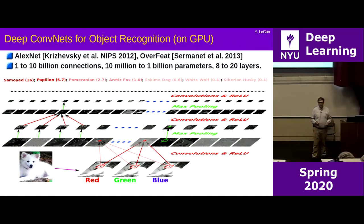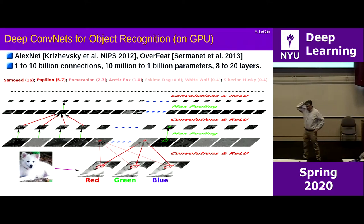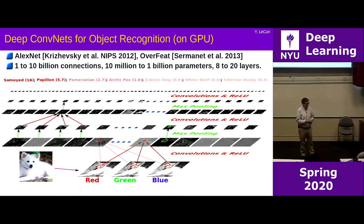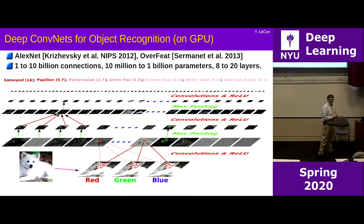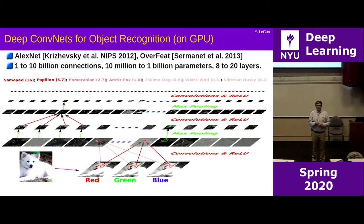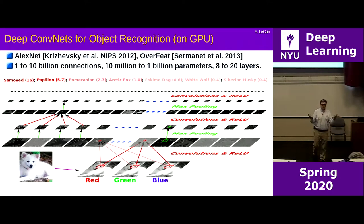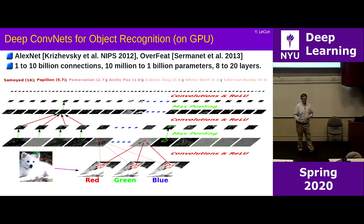Around 2003 or 2004, we started a kind of conspiracy: we got together and said we're going to beat some records on datasets, invent new algorithms to train very large neural nets, and collect very large datasets to show the world that these things really work, because nobody really believed it. And that really succeeded beyond our wildest dreams, particularly in 2012.